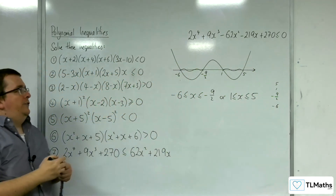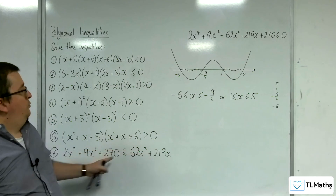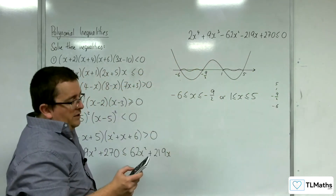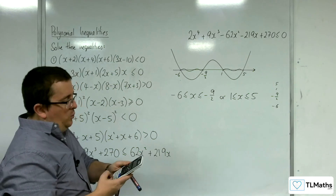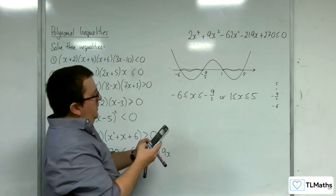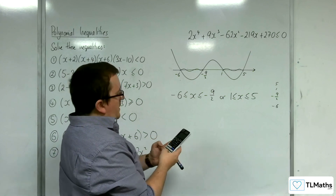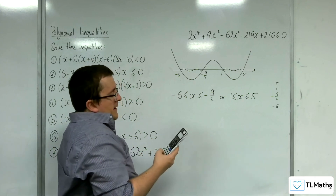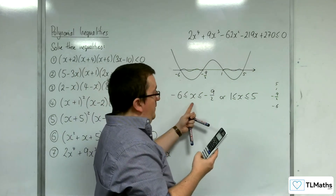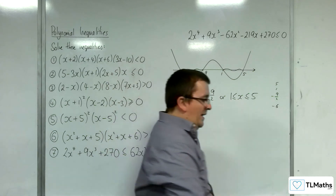I would also verify this in the inequality solver: go to menu, then B, inequality, degree 4, less than or equal to 0 (option 4), and enter 2, 9, minus 62, minus 219, 270. The solver returns: minus 6 ≤ x ≤ minus 9 halves, and x ≥ 1 but ≤ 5. That confirms our answer, and that's how we solve quartic inequalities.